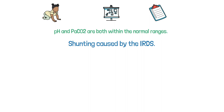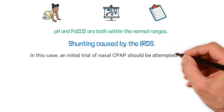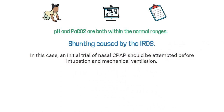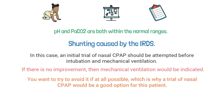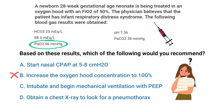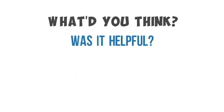In this case, an initial trial of nasal CPAP should be attempted before intubation and mechanical ventilation. If there is no improvement, then mechanical ventilation would be indicated, but usually you want to try to avoid it if at all possible. That's why a trial of nasal CPAP would be a good option for this patient. None of the other answer choices really make sense, so the correct answer is A: start nasal CPAP at five to eight centimeters of water pressure.